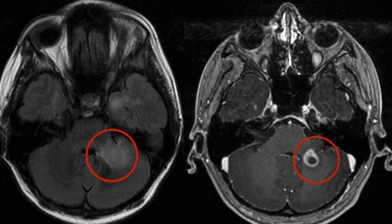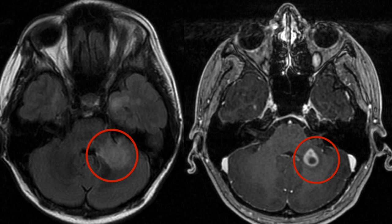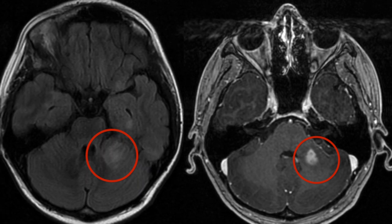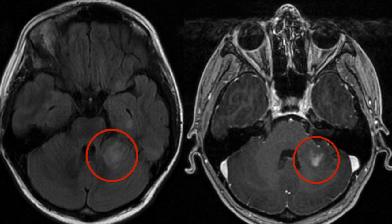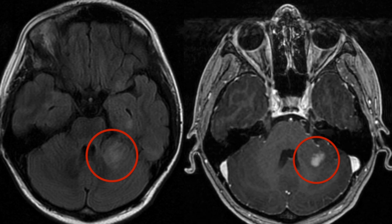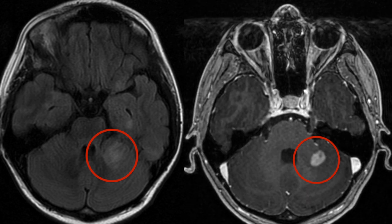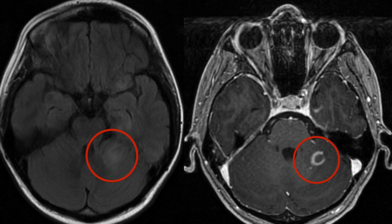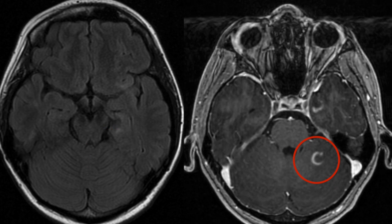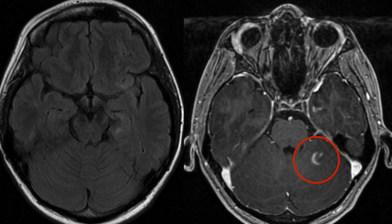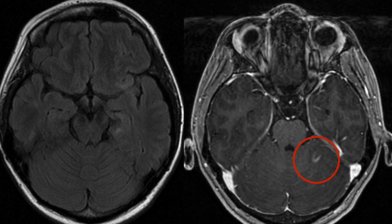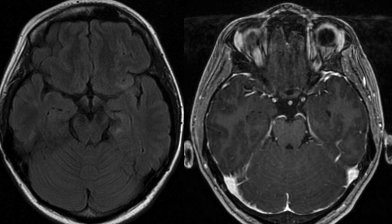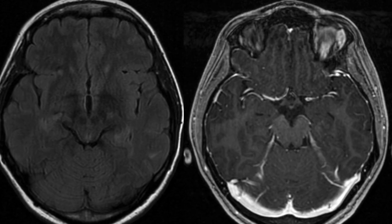On the right hand side, the post-contrast study, we see that there's abnormal contrast enhancement and more specifically there's ring enhancement. This tells us that this lesion is brand new, because the breach of the blood-brain barrier and the leaking out of the dye from the blood vessel into the brain only occurs for a few weeks when the lesion is brand new.